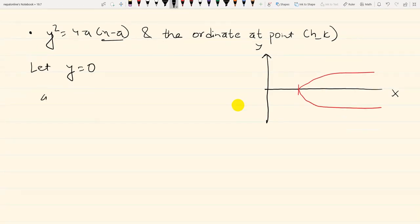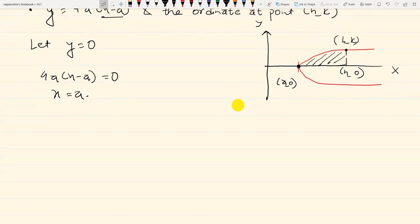So the curve passes through point (a,0). The point is (h,0), where h equals a. This is the vertex of the parabola.